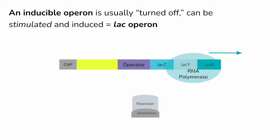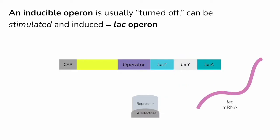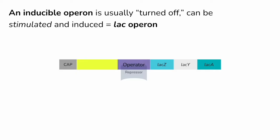Once transcription occurs, we have the lac mRNA, which can then later be translated into a protein that can digest the lactose. Once that lactose is all gone, it no longer binds to the repressor, which means the repressor is back on the operator and we cannot have transcription any longer.